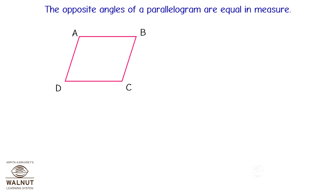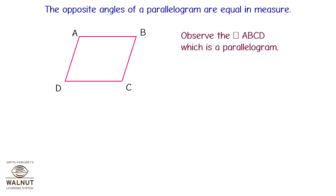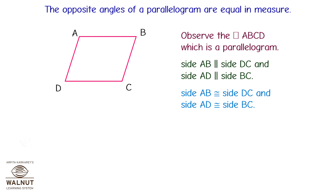In a parallelogram, the opposite sides are parallel to each other. Let's now learn about the opposite angles of a parallelogram. Observe the quadrilateral ABCD, which is a parallelogram. Side AB is parallel to side DC, and side AD is parallel to side BC. Side AB is congruent to side DC, and side AD is congruent to side BC. Let's now extend all four sides.